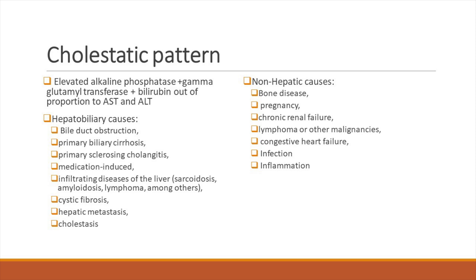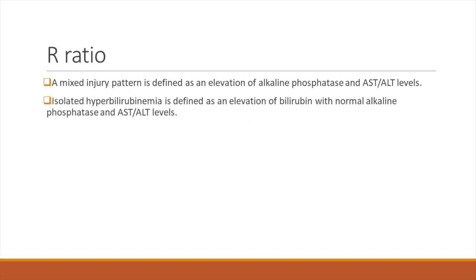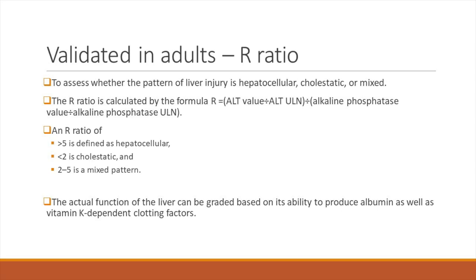A ratio has been formulated to help assess the pattern of liver injury — it is validated only in adults as of now but it helps us to assess the pattern as hepatocellular, cholestatic, or mixed. The R ratio is calculated as: (ALT value of the patient divided by ALT upper normal limit of the lab) divided by (ALP value of the patient divided by ALP upper normal limit of the lab). If the R ratio is more than 5, it is defined as hepatocellular; less than 2 is cholestatic; and 2 to 5 is a mixed pattern.